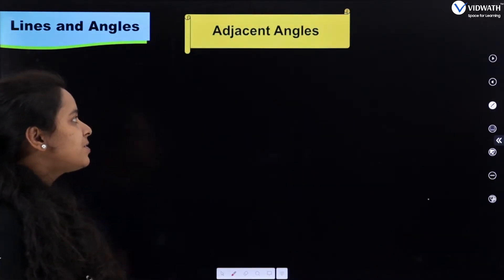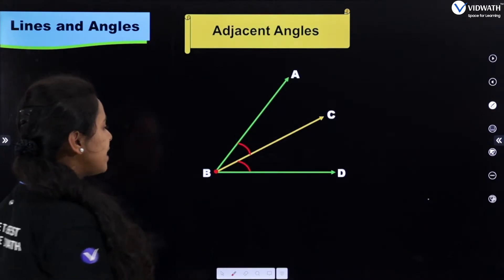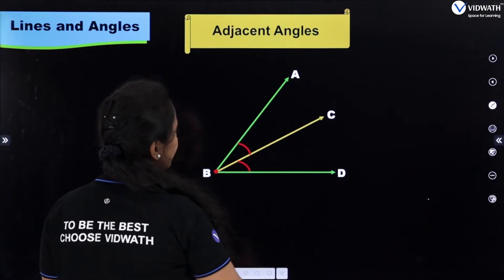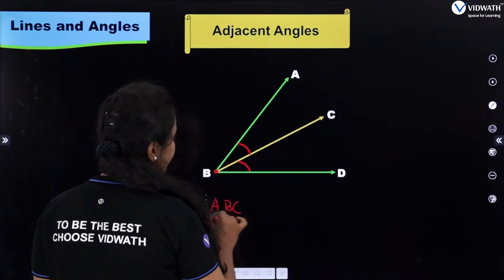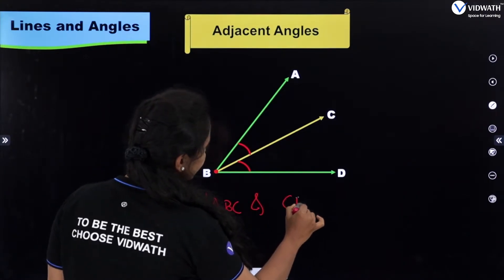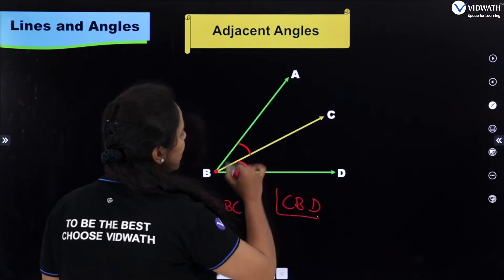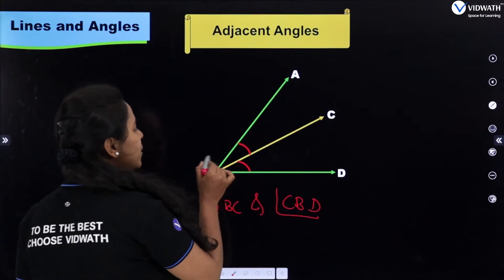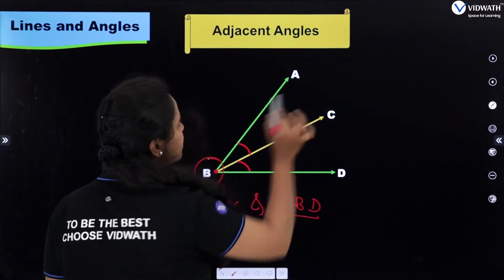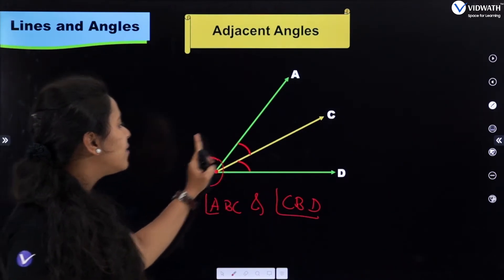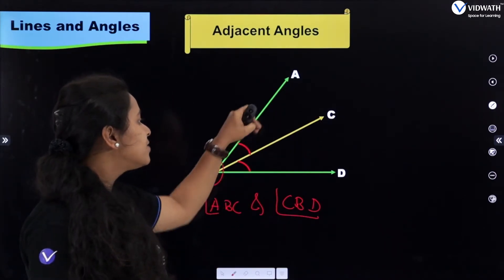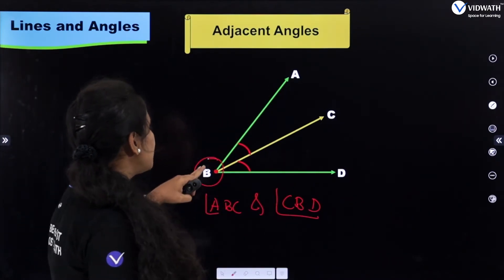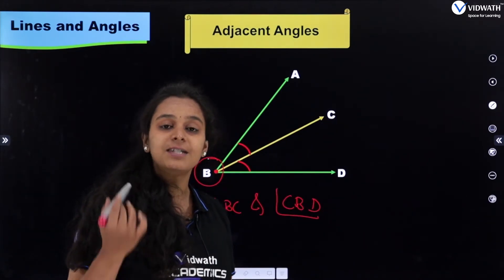The next one is adjacent angles. Angle ABC and angle CBD are called adjacent angles because they share a common vertex B and a common side BC. Any two angles having a common side and a common vertex are called adjacent angles.